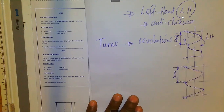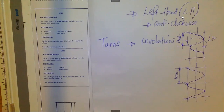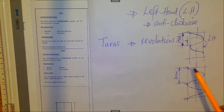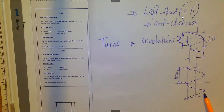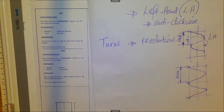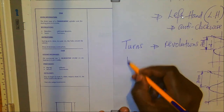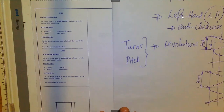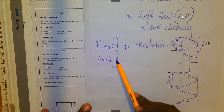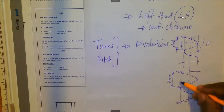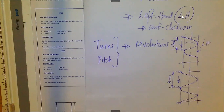The distance from one point to another similar point at the start of another turn or another revolution is what we refer to as a pitch. The movement around a cylinder from one point to a similar point at the start of another turn is what we refer to as a revolution or a turn. Turns and pitch are interrelated — because for you to complete a turn, you need to move a distance along, which we refer to as the pitch.